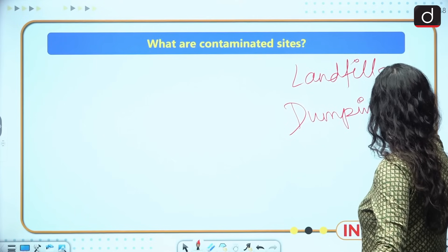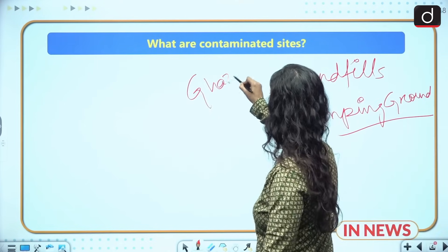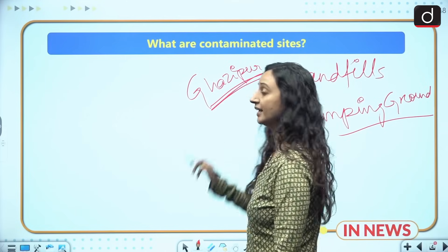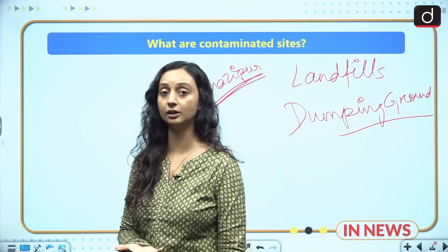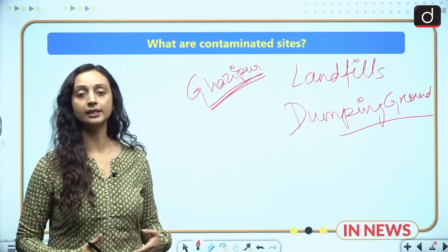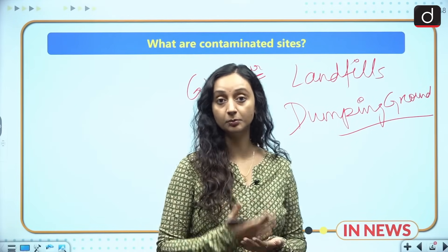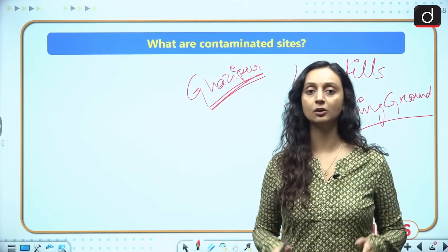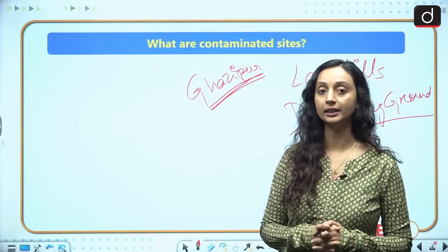In fact, there is a very infamous landfill in Delhi — the Ghazipur landfill — which is contaminated by heavy metals and hazardous chemicals. Sites like these cause groundwater pollution, air pollution, and soil pollution. That is why these rules become very important.